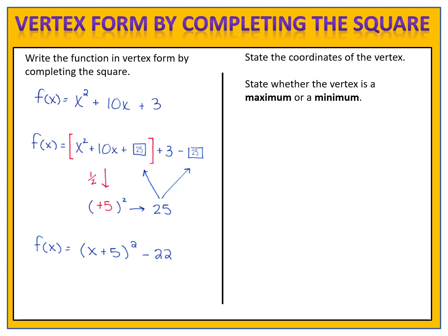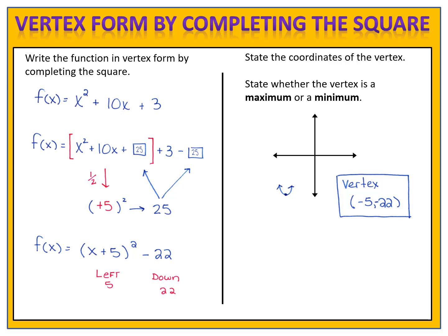Now we write the function in vertex form: f of x equals x plus 5 squared — because half of the middle number was 5 — and then 3 minus 25 gives minus 22. So f of x equals x plus 5 squared minus 22. The x plus 5 tells me the function went left 5, and the minus 22 means the parabola shifted down 22. The coordinates of the vertex are negative 5, negative 22, and because the leading coefficient is positive and the parabola opens upward, the vertex is a minimum.